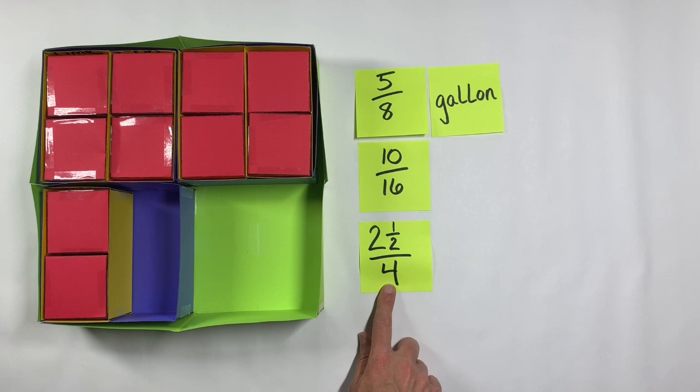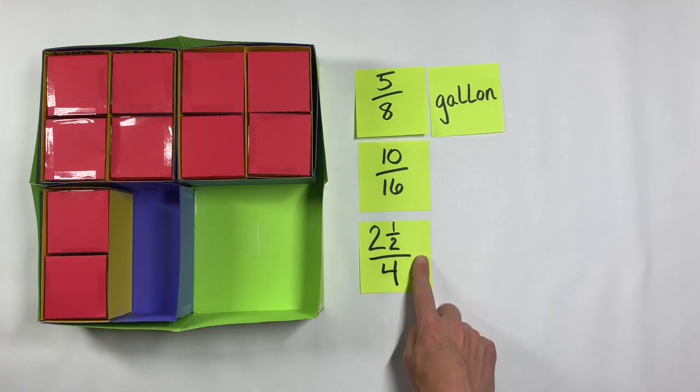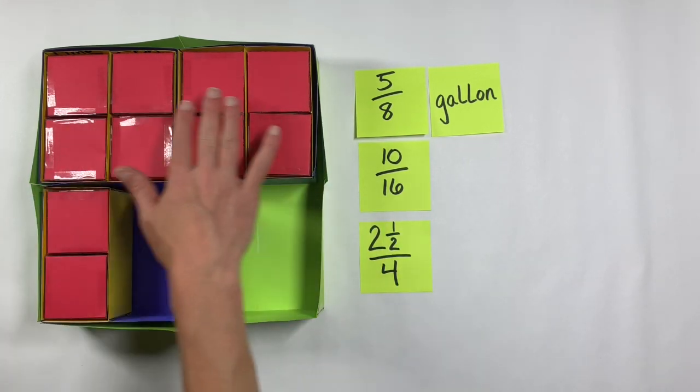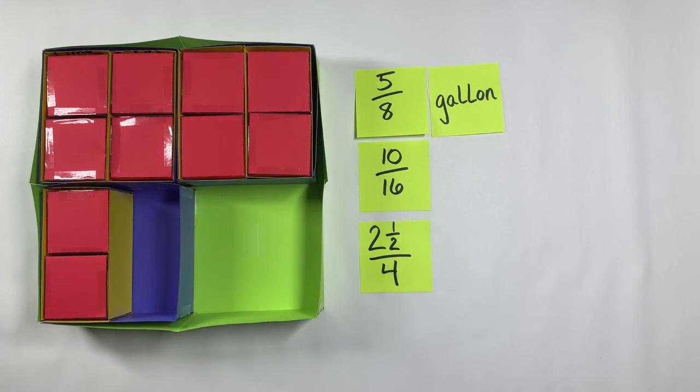Two and a half fourths of a gallon. Now this looks really strange when we write it down. This is called a complex fraction. This is beyond fifth grade standards. Students will learn about complex fractions and learn how to work with them and explore them in future grades. If a student tries to use a complex fraction to describe this quantity, that's awesome. That shows that they're getting creative and thinking about these quantities in a variety of ways. They are extending their own fraction knowledge beyond what they've already been taught.